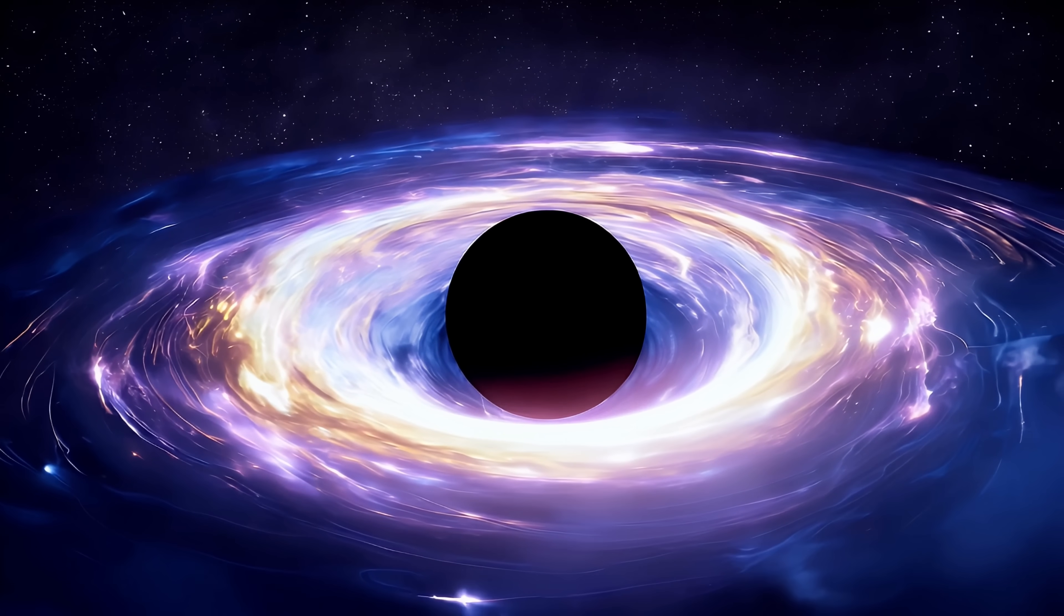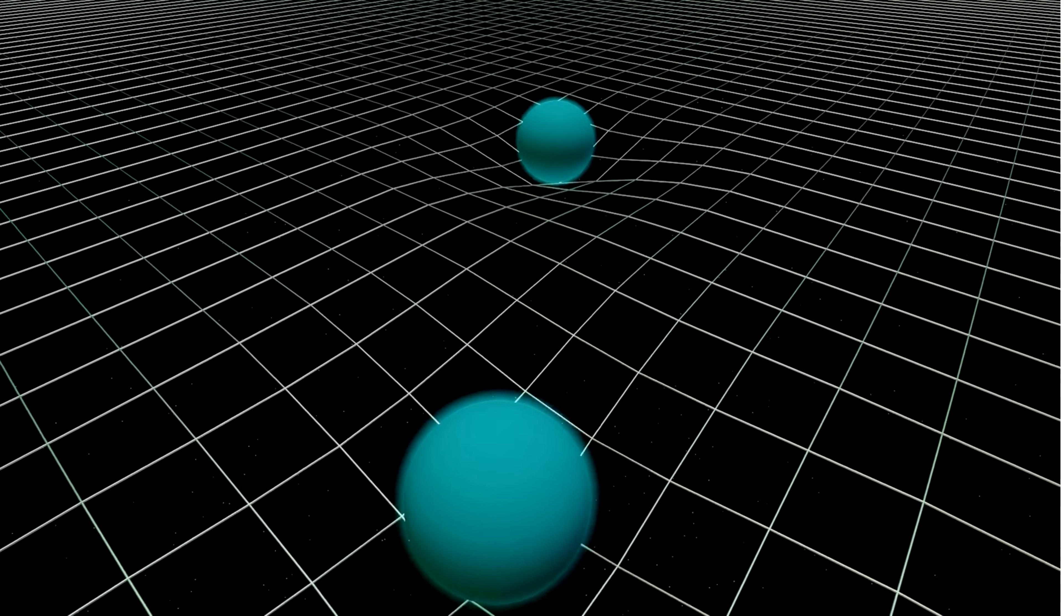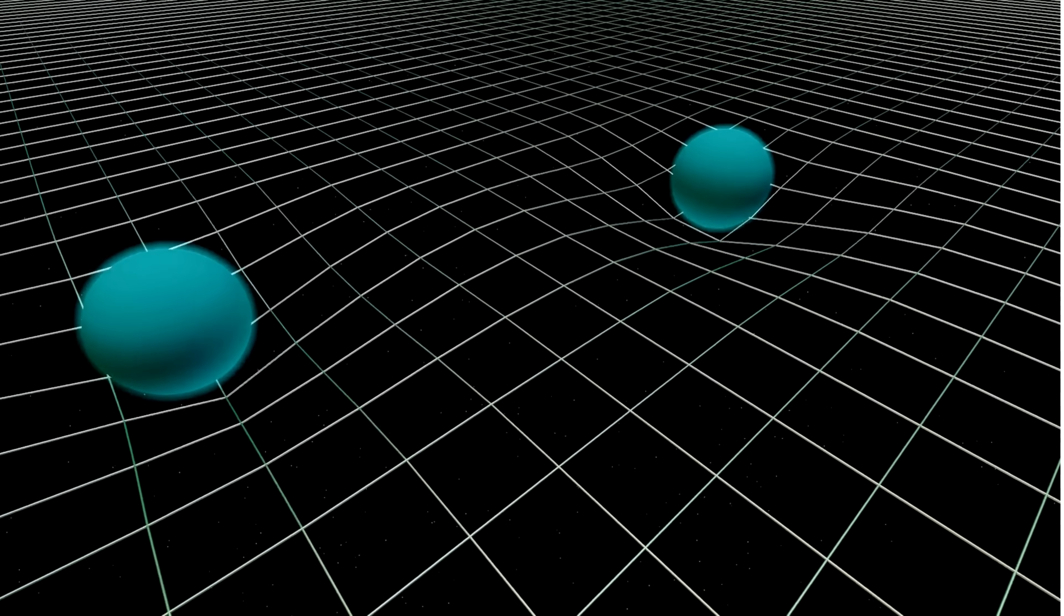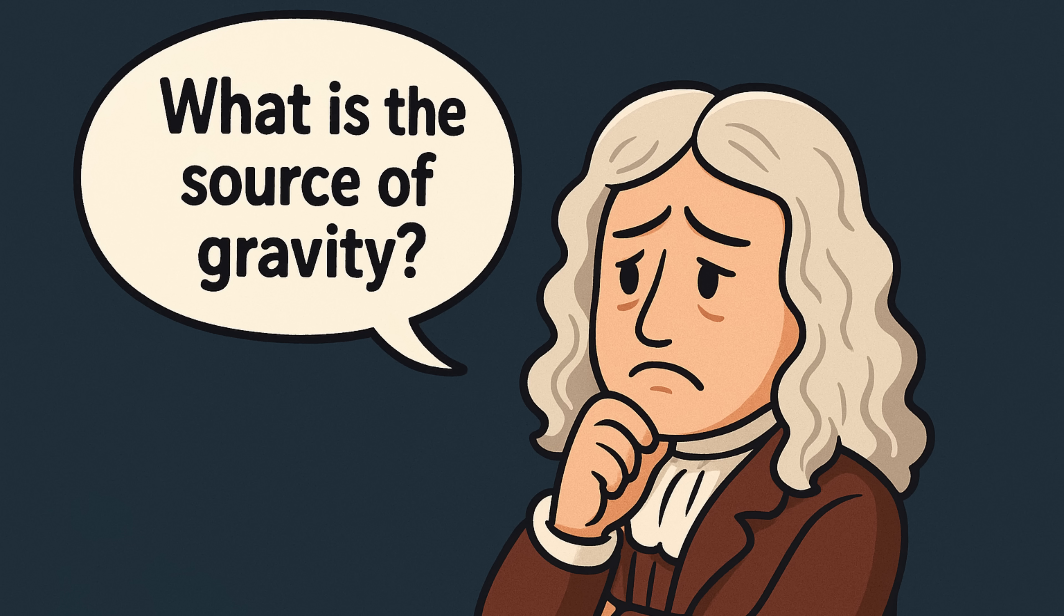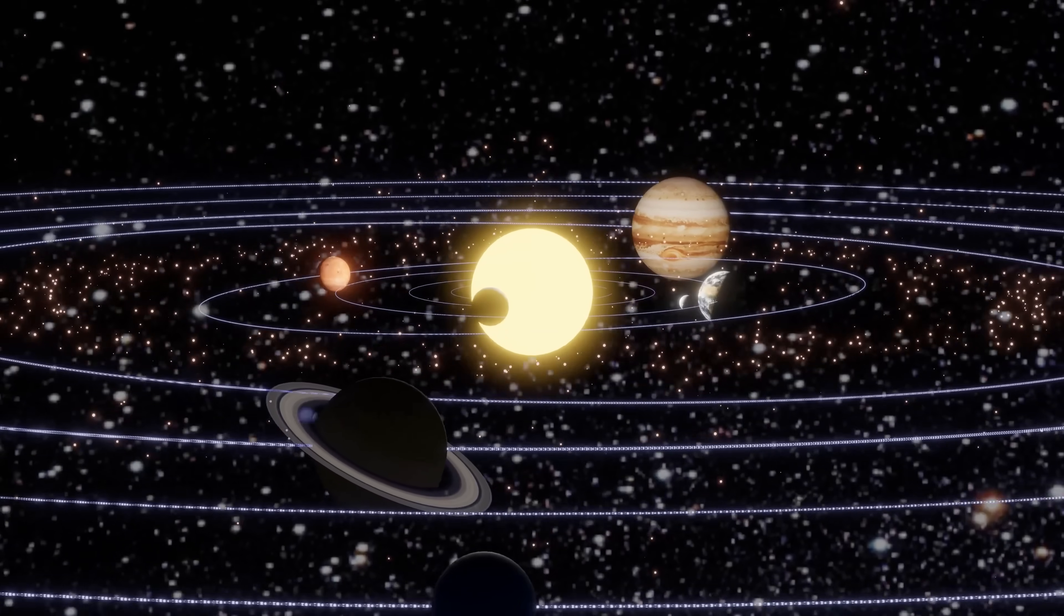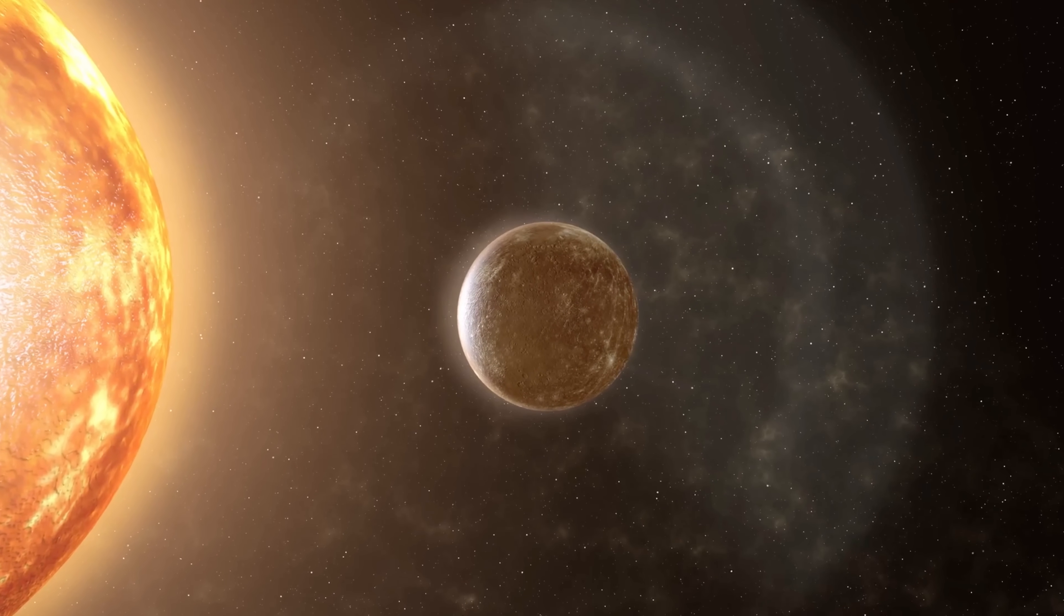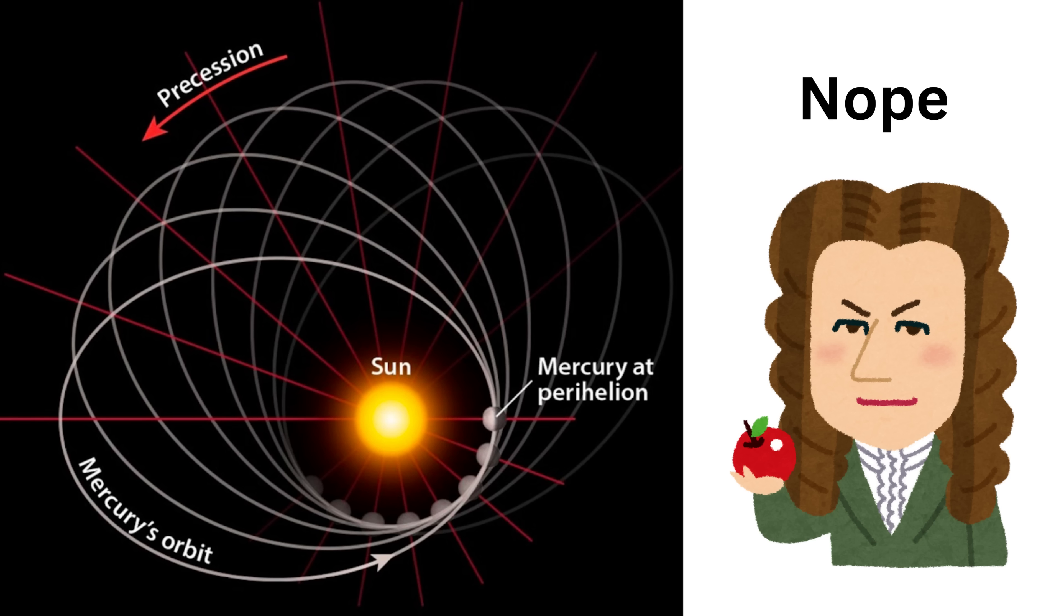They didn't explain everything. Some questions remained unanswered. Why do objects pull on each other at all? What is the source of gravity? Also, there was a tiny problem with Mercury's orbit, the smallest and closest planet to the Sun. Its path around the Sun has a strange wobble in its orbit that Newton's laws couldn't fully explain.